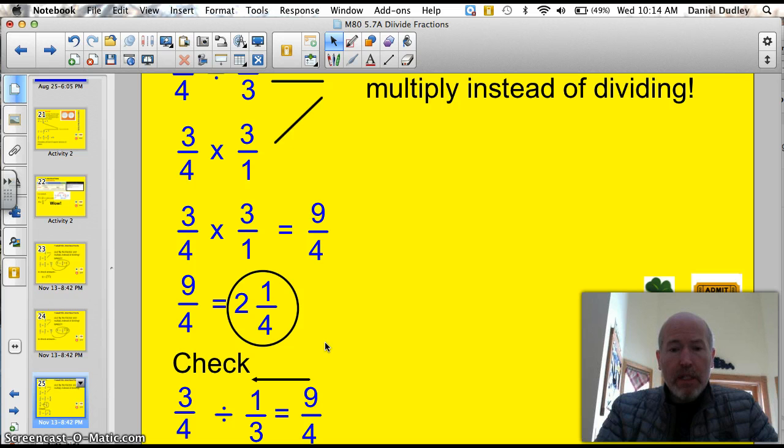Well, let's just check it. When checking, it's best to leave it in the improper fraction form. So, 9 fourths times 1 third equals 3 fourths. Well, this is a little complicated, but let's just try it once. 9 times 1 is 9. 4 times 3 is 12. So, I have 9 twelfths equals 3 fourths. Yeah! 9 twelfths equals 3 fourths. Just a different form.